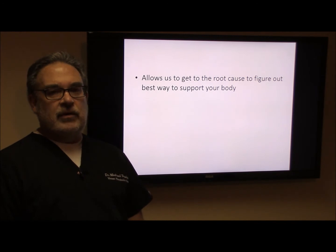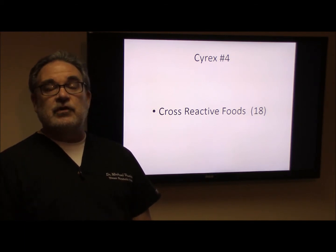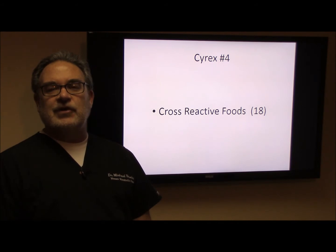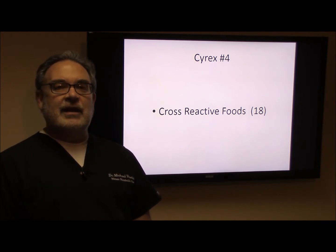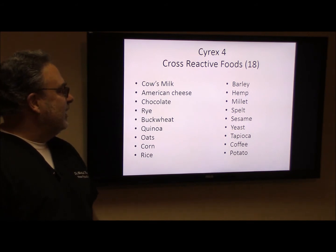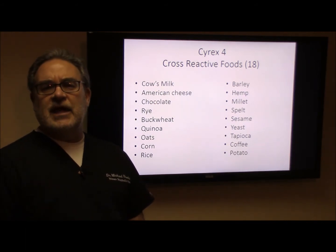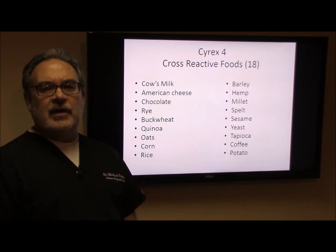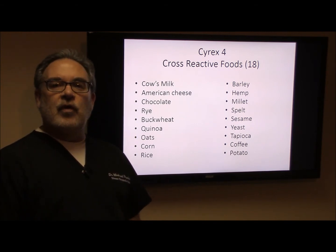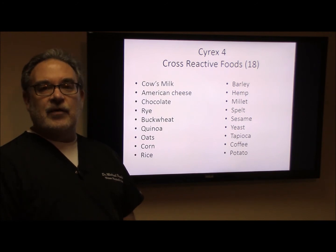If you already have an autoimmune issue, the final array we test for is Cyrex Array 4. This is really important because there are certain foods that we commonly eat that cross-react with gluten — meaning they have a very similar molecular structure to gluten and our body has a hard time differentiating between gluten and these other molecules. Some of the cross-reactive foods are cow's milk, cheese, chocolate, rye, oats, corn, rice, potato, and coffee. Since we can't restrict all of these from our diet, what we like to do is test with Cyrex Array 4, determine which foods we need to avoid while we start to heal the leaky gut, and then possibly in three to six months reintroduce these foods to see if your body reacts and whether you can include them again.